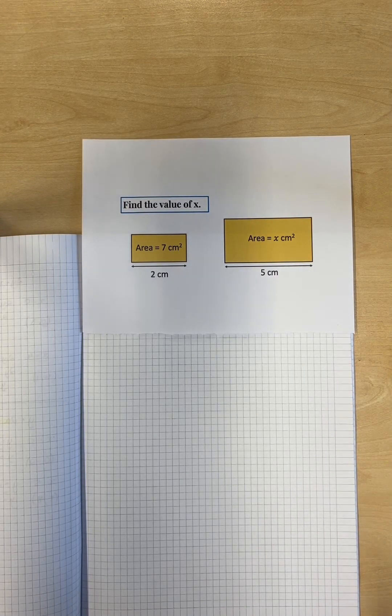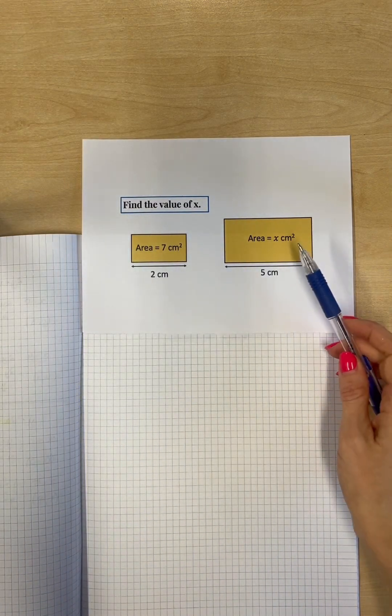Okay, we are going to find the value of x, which is a missing area here.